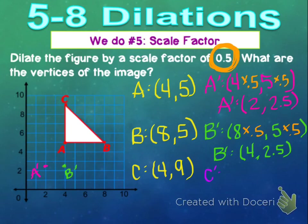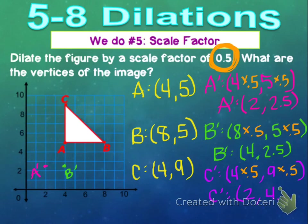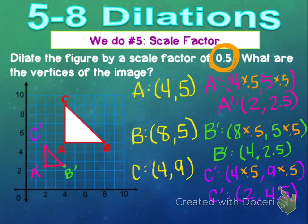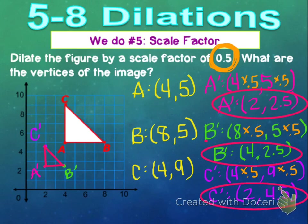For C prime, originally at (4, 9): multiplying both by one-half gives us half of 4 = 2, and half of 9 = 4.5 — so C prime is at (2, 4.5). To find the dilated image, connect the points C to A, A to B, and B to C. The answer they really want are the vertices: A prime at (2, 2.5), B prime at (4, 2.5), and C prime at (2, 4.5).